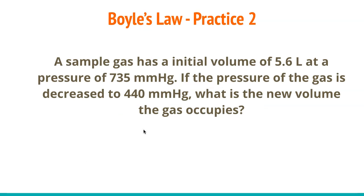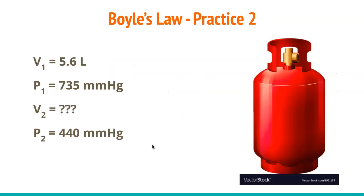Second Boyle's Law problem: a gas sample has an initial volume of 5.6 liters at a pressure of 735 mmHg. If the pressure is decreased to 440 mmHg, what is the new volume? Pause the video and identify P1, V1, P2, and V2. V1 = 5.6 L, P1 = 735 mmHg, P2 = 440 mmHg, and V2 is what we're solving for.